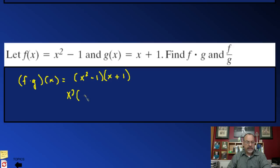Applying the distributive property, we're going to multiply x squared times this second function, and then the 1, and then we're going to add like terms. So x squared times x is going to be x cubed.